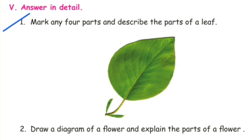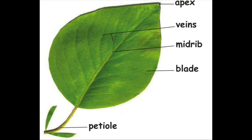Answer in detail. First one: mark any four parts and describe the parts of a leaf. Apex is the tip of the leaf. Veins are the nerves of the leaf. Midrib is the central nerve. Blade is the leaf surface. Petiole is the leaf stalk.